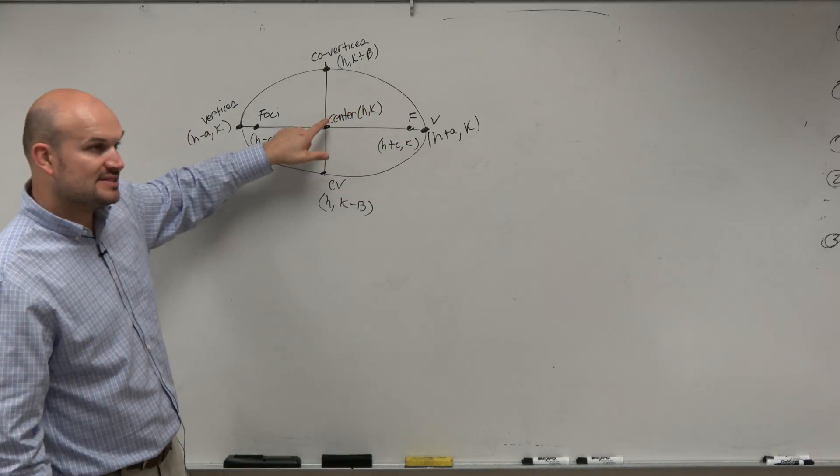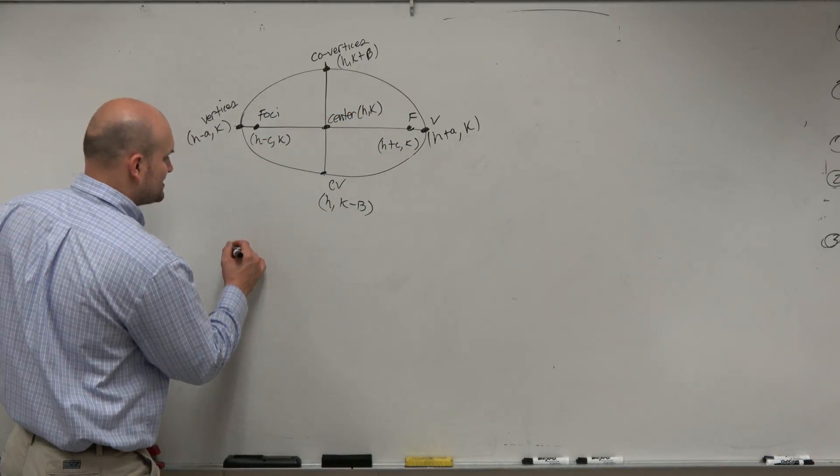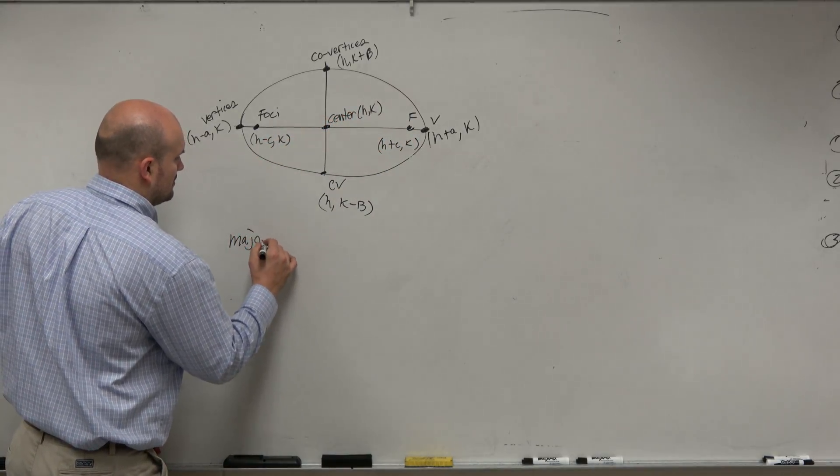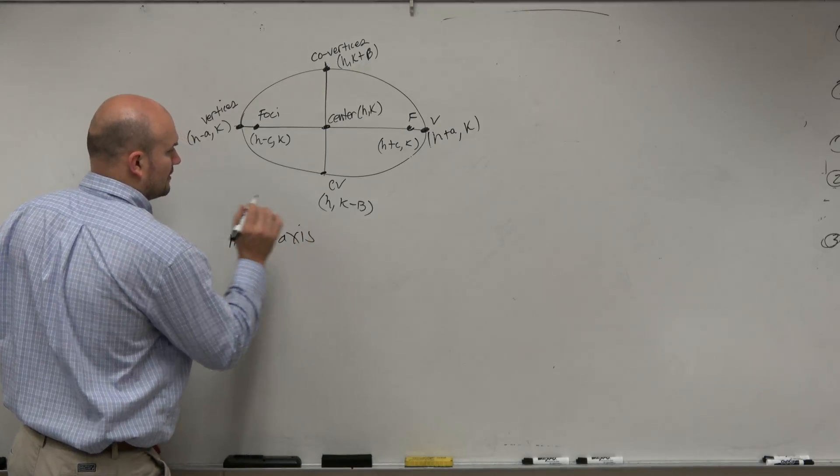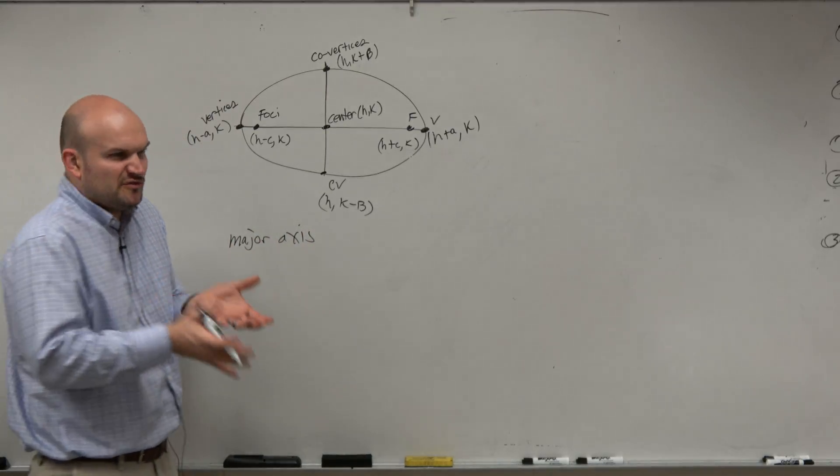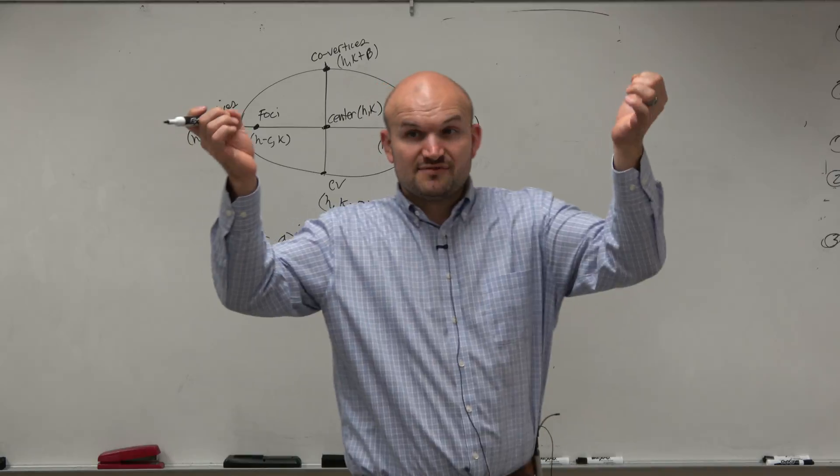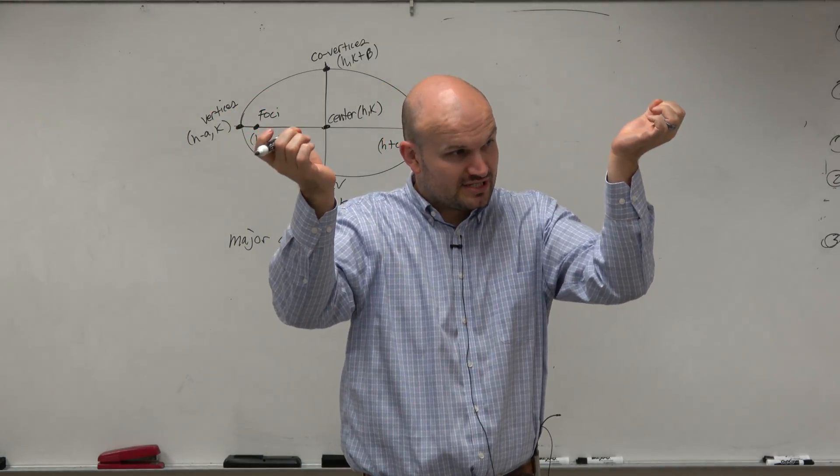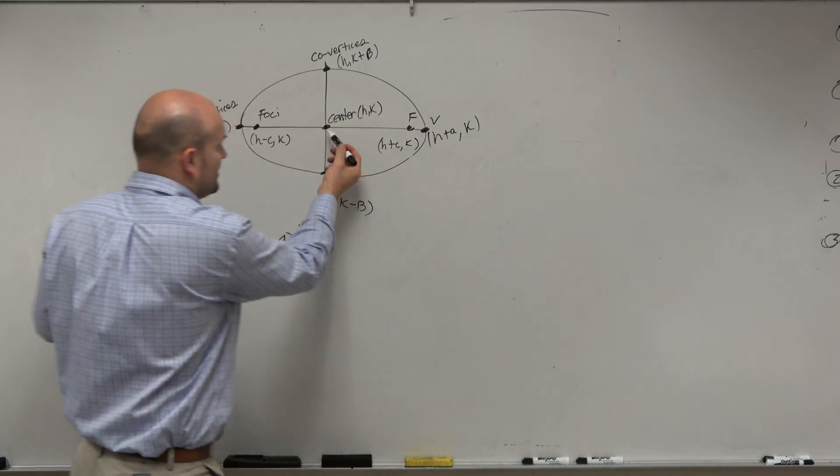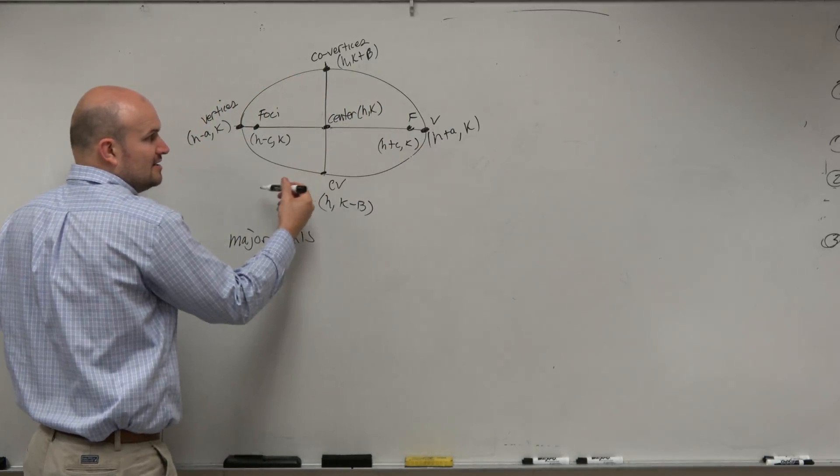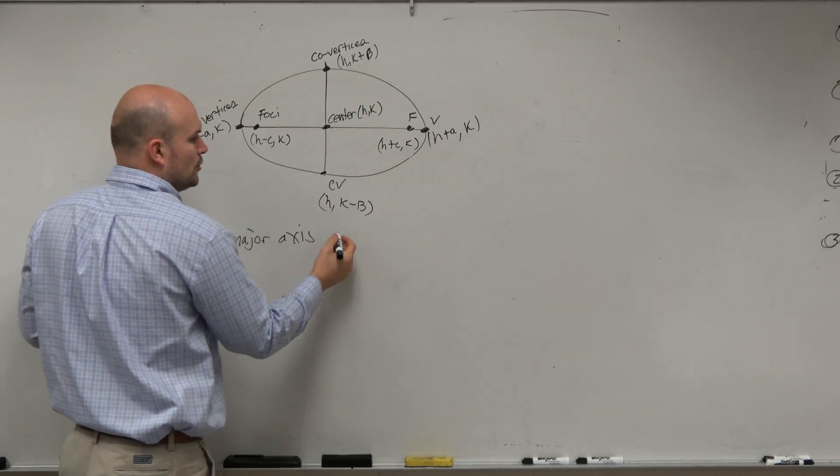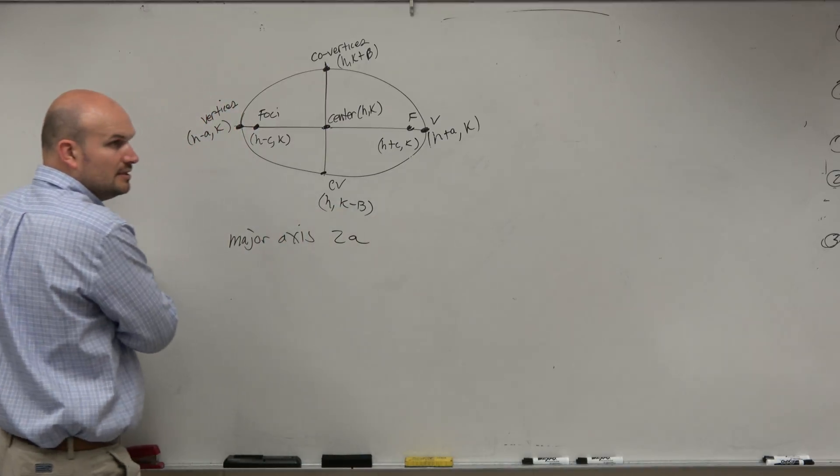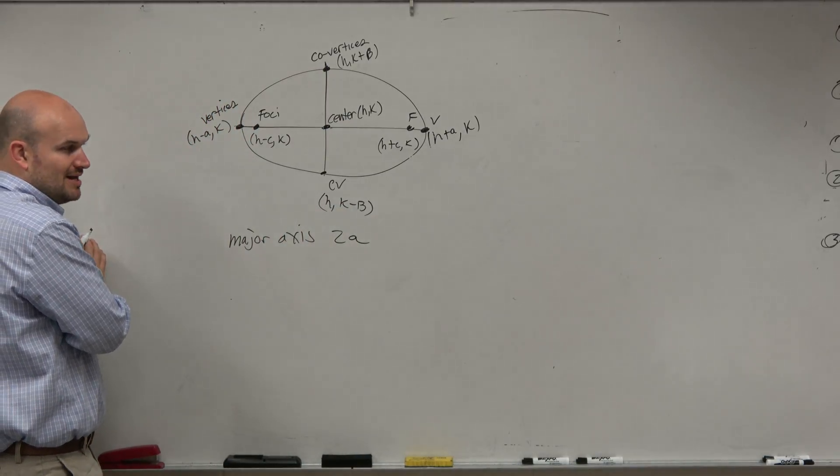The foci lie on, and the center is what we call our major axis. So previously, we just talked about vertices in a. But the distance from vertex to vertex, or the distance between your two vertices, is like from here to here is a. From here to here is a. So from here to here has to be 2a. So that's going to be helpful for us. The major axis is 2a.